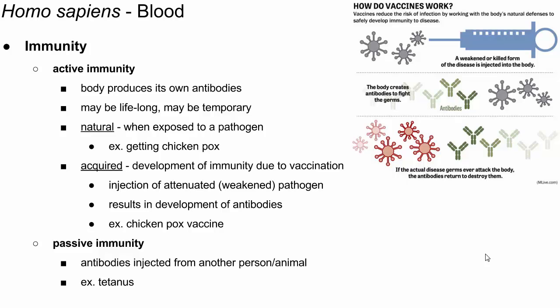Passive immunity is when they actually inject antibodies into you from another person or from an animal. A tetanus shot is an example of passive immunity — they inject antibodies from another person or animal. There are also many vaccines you may get before traveling internationally, because certain diseases are common in some countries but not here.